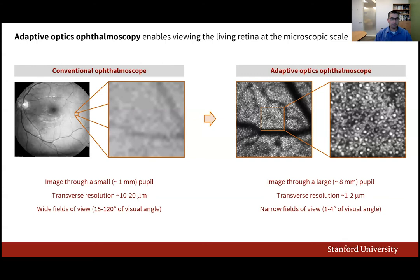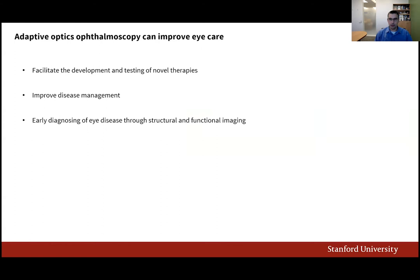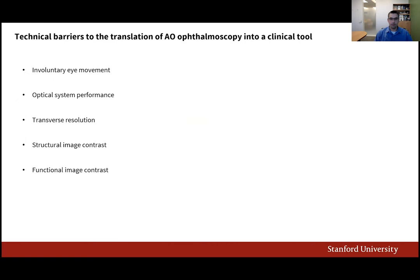By detecting minute retinal changes, adaptive optics ophthalmoscopy can contribute to improving eye care by facilitating the development and evaluation of novel therapies, by improving disease management through personalized treatment, and also by mitigating vision loss through earlier diagnosis of eye disease.